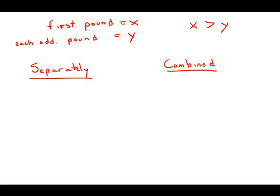To mail a package, the rate is X cents for the first pound and Y cents for each additional pound, where X is greater than Y. Two packages weighing three pounds and five pounds respectively can be mailed separately or combined as a single package. Which method is cheaper and how much money is saved?